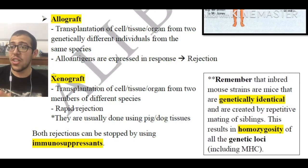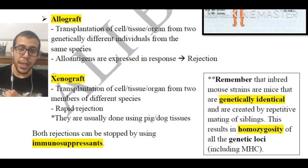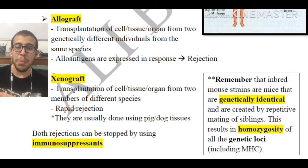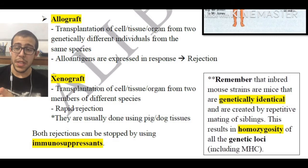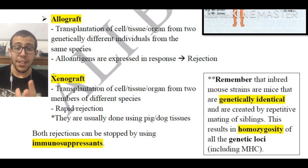Alloantigens are expressed in response — these alloantigens are incredibly important and are the ones that are going to be eliciting an immune response. This will also be discussed in a later video. So rejection is going to be taking place.